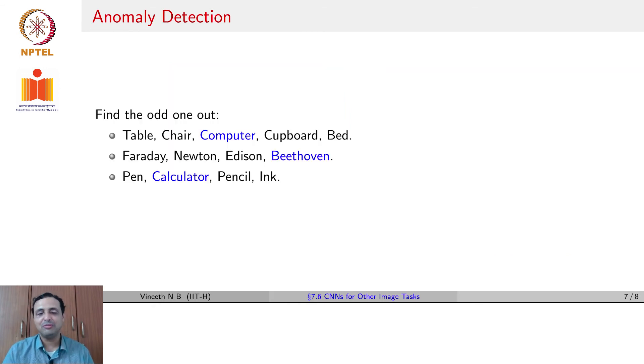A third task that we will briefly describe to close the lectures in this week is the task of anomaly detection. It is a need in many applications today, where given a set of inputs or set of data points, one may need to find out which of these is an outlier or anomalous with respect to the distribution that we are handling. Generally speaking, given keywords such as table, chair, computer, cupboard, bed, or Faraday, Newton, Edison, Beethoven, or pen, calculator, pencil, ink, you are looking to find the odd one out. Computer in the first case, Beethoven in the second case, and calculator in the third case.